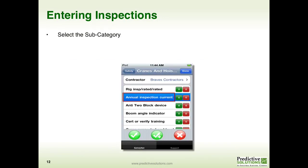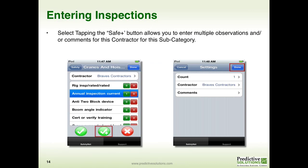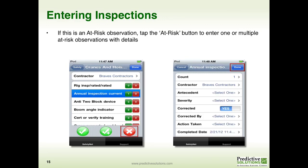Once you have selected your contractor, highlight the specific subcategory that you're going to observe. With the subcategory highlighted, if you want to collect safe information, simply tap on the green check. If you want to add multiple saves or add comments with your safe items, click on the check plus. This will bring up a window that will allow you to change the count and type in comments to be captured as part of that safe item. To enter an at-risk item with the subcategory highlighted, tap on the X. You will be presented with a screen to fill out additional details about your at-risk item. Once filled out, click Done.